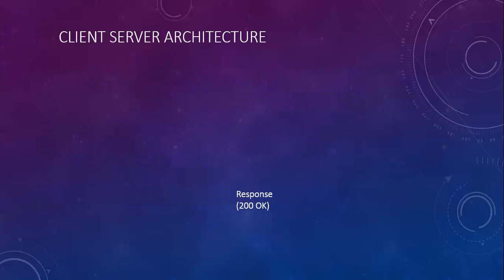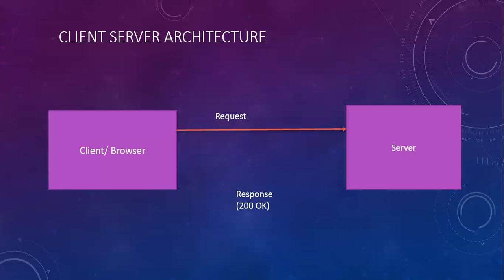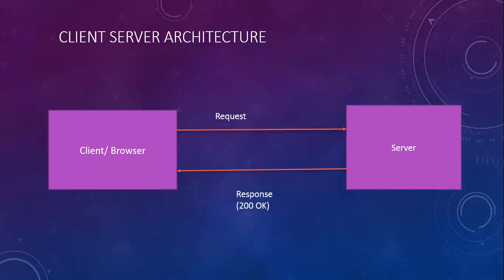Now, how does this work in client-server architecture? If you open a browser and watch a video on YouTube — whenever you search anything on YouTube and click search, it sends a request to the YouTube server. YouTube then serves your request and returns the required data, which is known as the response. For example, right now I'm getting response code 200. This is an HTTP response code — 200 means OK, meaning the server has successfully responded to your request.